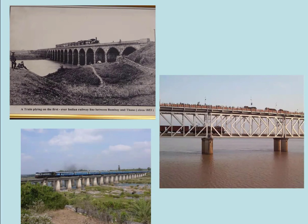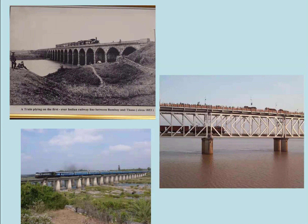One committee was constituted in 1959, headed by Mr. Khosla. They decided that for bridges constructed for railway and road, the probable occurrence of the river flood should be around 50 years. So generally when we talk about design discharge, we are working out the discharge which may occur once in 50 years.